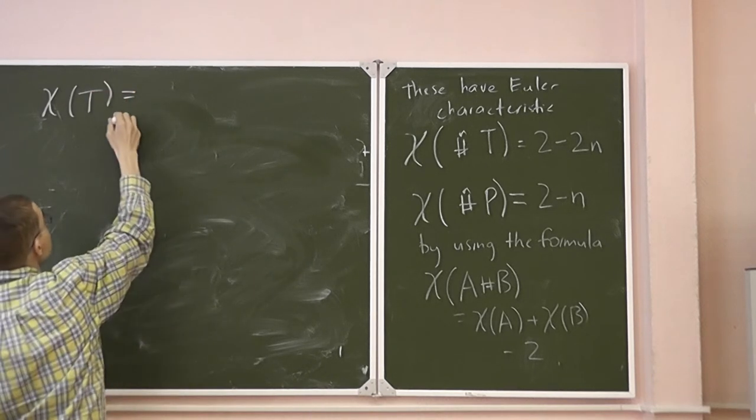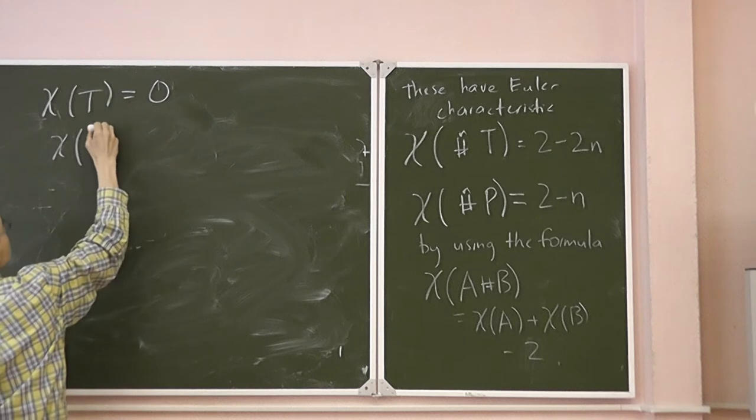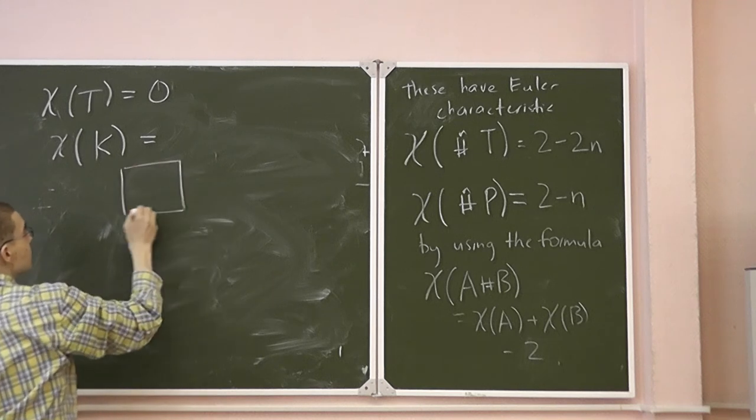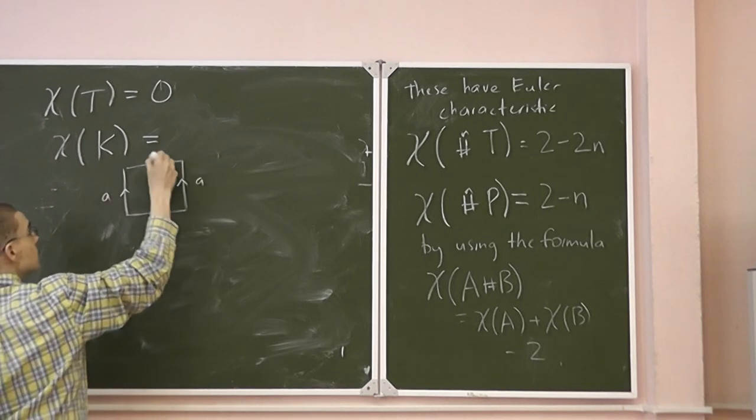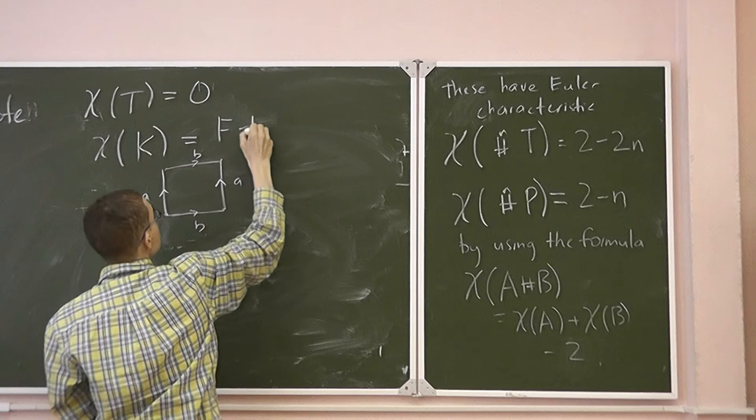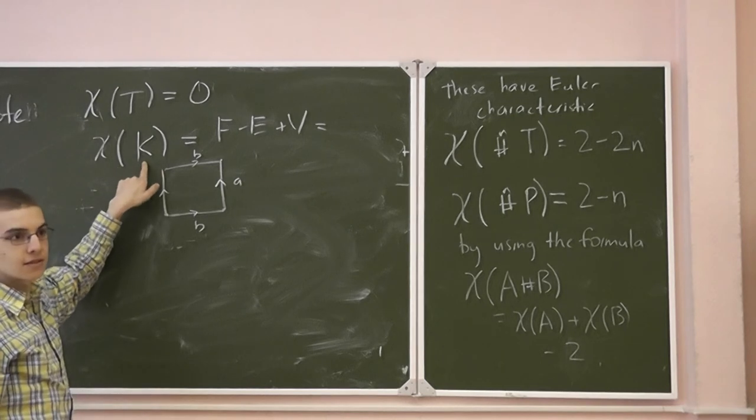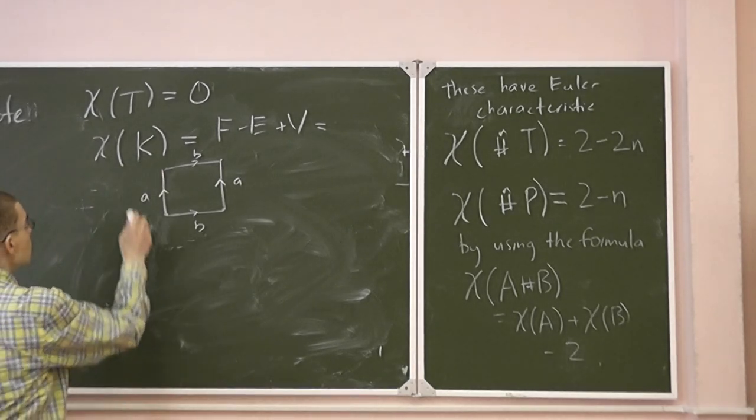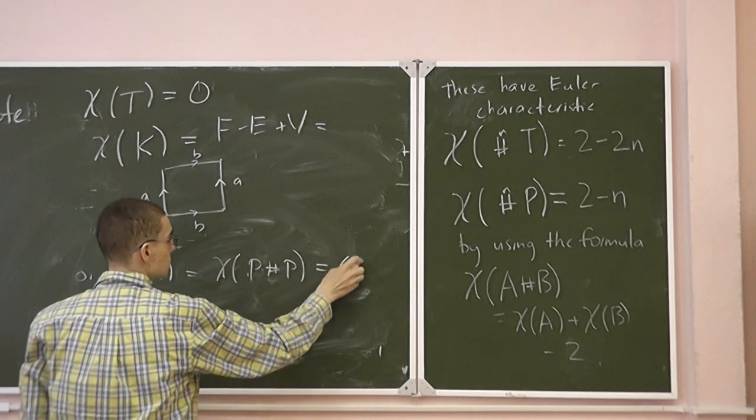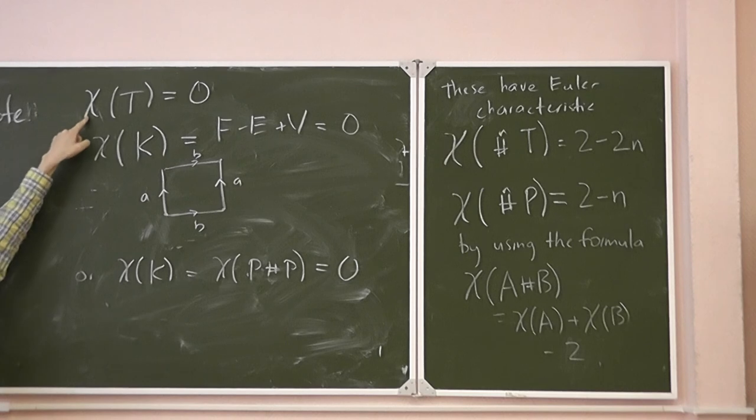So what is the Euler characteristic of the torus? Zero. And what is it for the Klein bottle? Either remember how we can construct it from faces, Klein bottle projective... Or remember that the Klein bottle is a projective plane hash projective plane.